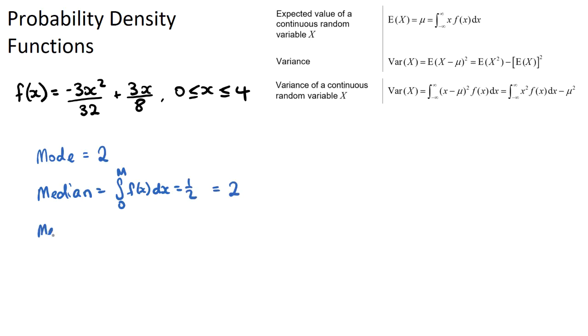Okay, the mean, which is often referred to as the expected value, or you might see it as mu—they're all the same thing. We can use this function up here, the expected value of a continuous random variable, which is just the integral between our given limits of x multiplied by our function. So it'll be the integral between 4 and 0 of—we can just multiply our function by x—so it'll be negative 3x cubed now over 32 plus 3x squared over 8 dx. We can just use our calculator to solve this, so let's go back to our calculator. I'll grab our function here.